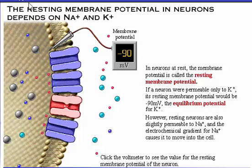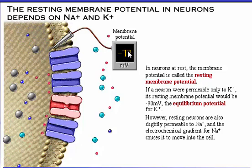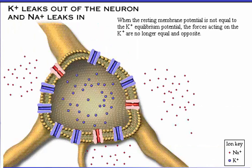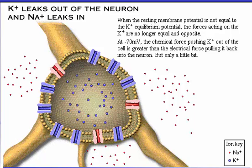The resting membrane potential results from the movements of both sodium and potassium ions. The positively charged sodium ions that have entered the neuron make the membrane potential more positive than minus 90 millivolts. For many neurons, the resting membrane potential is close to minus 70 millivolts. At minus 70 millivolts, the chemical force pushing potassium out of the cell is greater than the electrical force pulling potassium back into the neuron, but only a little bit.